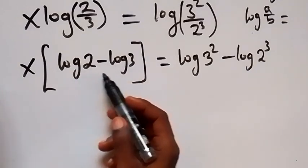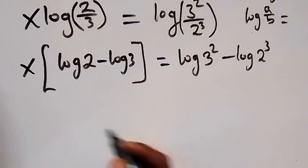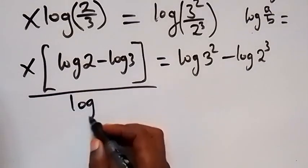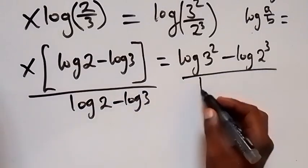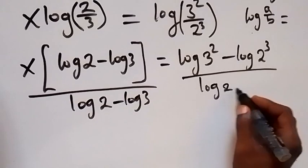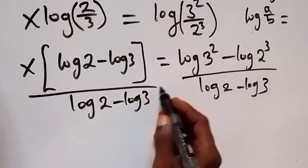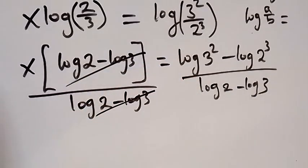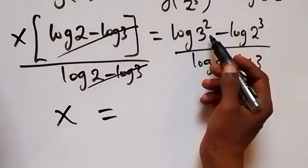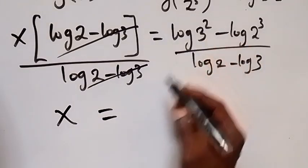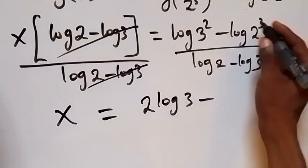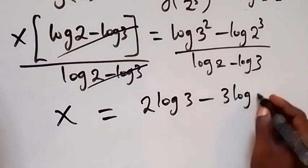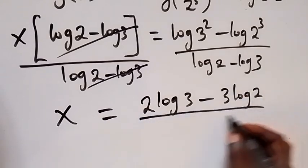We can isolate x by dividing both sides by (log 2 minus log 3), so that cancels on the left and we are left with x. Applying the power rule of logarithms on the right, we bring the powers to the front, giving 2 log 3 minus 3 log 2, all divided by log 2 minus log 3.